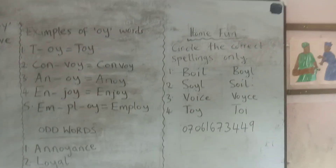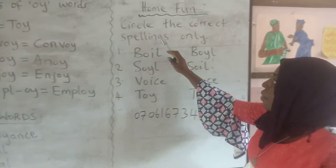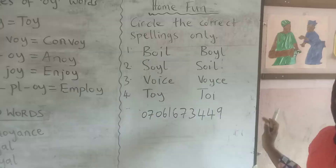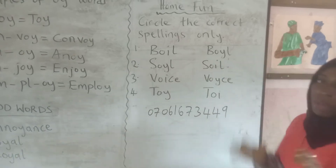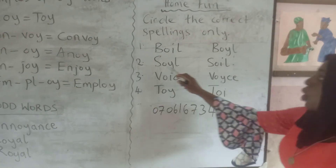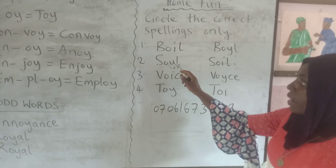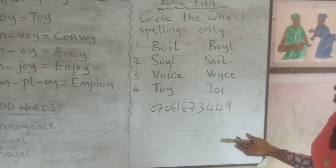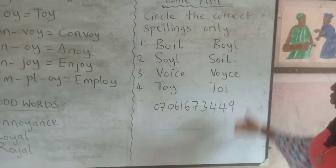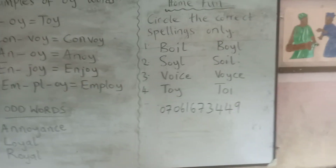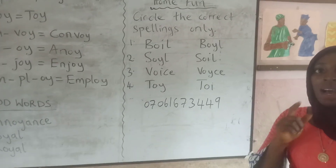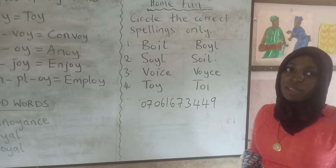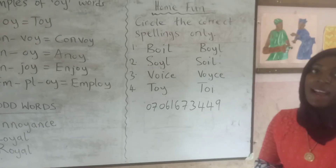It's now time for me to see how you understand this lesson. You are to circle the correct spellings only. If boil is spelled B-O-I-L or B-O-Y-L — choose the right one. Soil: is it S-O-Y-L or S-O-I-L? Please make sure you do your homework, circle only the correct spelling, and submit it to me by WhatsApp. I'll be very glad to see your homework. See you, bye!